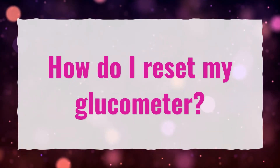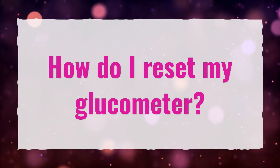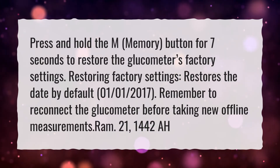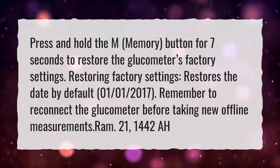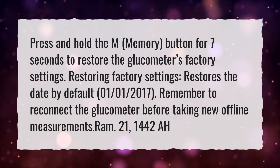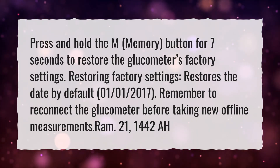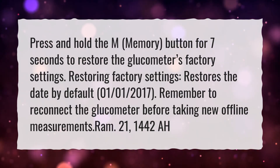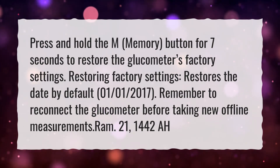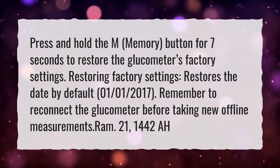How do I reset my glucometer? Press and hold the M (memory) button for 7 seconds to restore the glucometer's factory settings. Restoring factory settings restores the date by default to the 1st of January 2017.